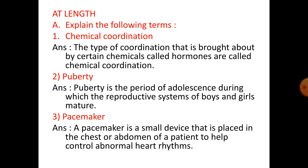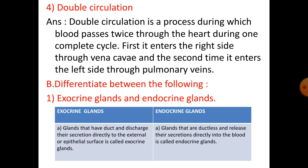Number three, pacemaker: a pacemaker is a small device that is placed in the chest or abdomen of a patient to help control abnormal heart rhythms. Number four, double circulation: double circulation is a process during which blood passes twice through the heart during one complete cycle — first it enters the right side via vena cava, and the second time it enters the left side via pulmonary veins.